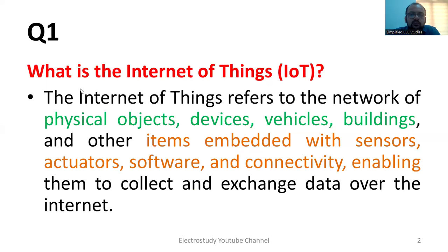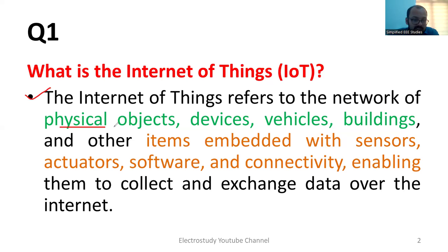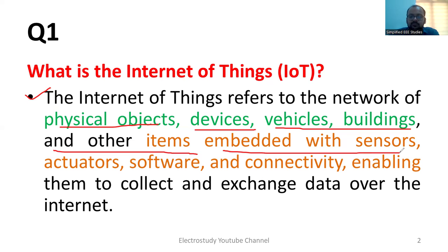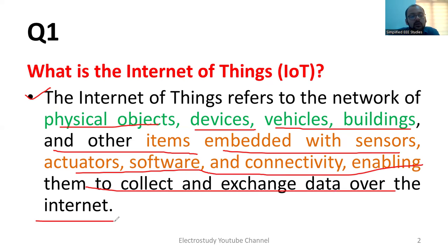The first question you can expect in that lab: What is Internet of Things (IoT)? You may be asked for a definition, and you are supposed to explain what IoT means. IoT refers to the network of physical objects, devices, buildings, vehicles, and other items combined with sensors, actuators, software, and connectivity, which enable them to collect and exchange data over the Internet.